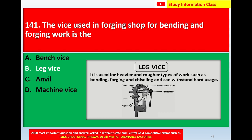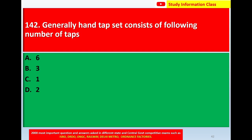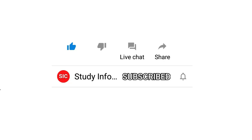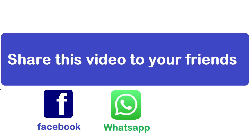So for question number 141, the vice used in a forging shop for bending and forging work — the correct answer is Option B, leg vice.